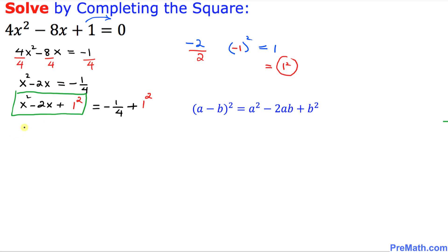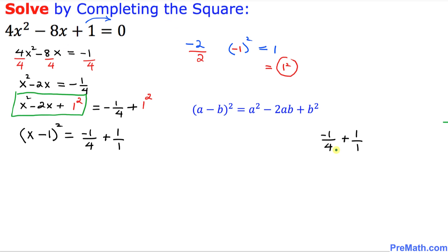So I can write this one as x minus 1 square equal to, here I can write this negative 1 fourth as negative 1 over 4. And this 1 square is same as plus 1. And 1 could be written as 1 over 1. And now right up here, I have copied down this number, these fractions right up here.